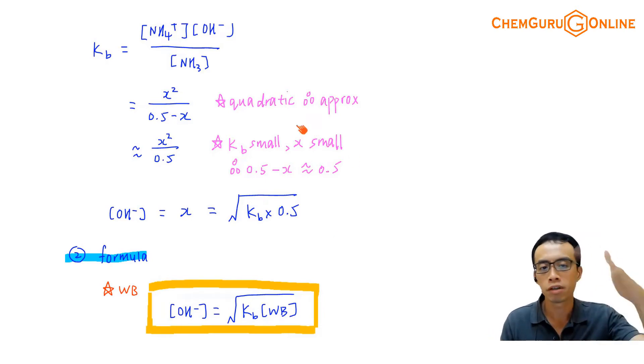It turns out to be exactly the same. The formula method is not a separate method, it's still ICE table with approximation. It's the conclusion - we skip the first few steps. For any monoprotic base dissociation, the approximation and ICE table will always turn out to be the same.